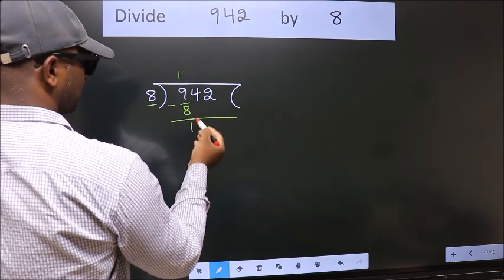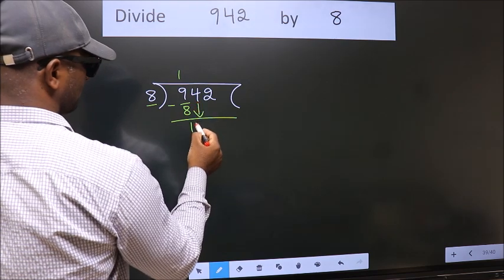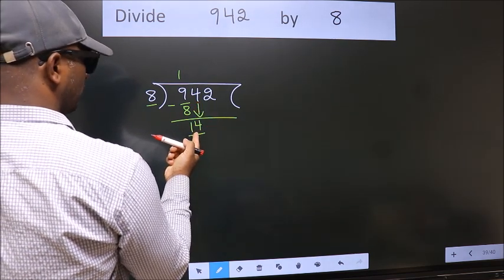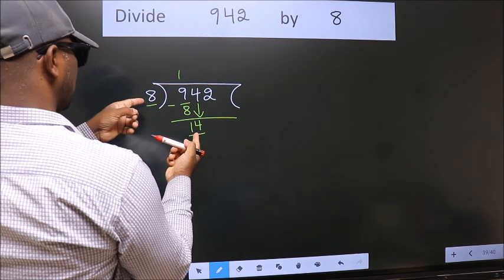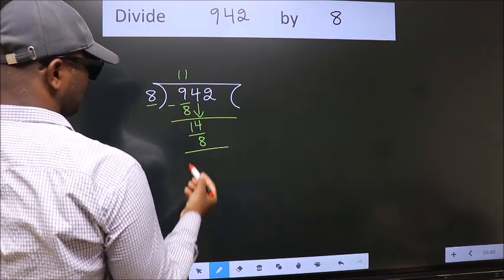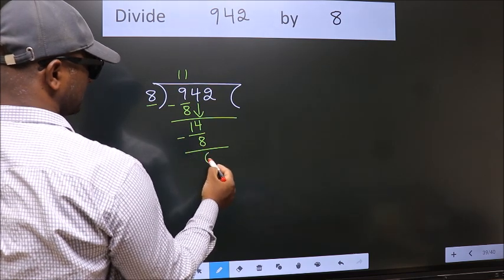After this, bring down the beside number. So 4 down. So 14. A number close to 14 in 8 table is 8 once 8. Now we subtract. We get 6.